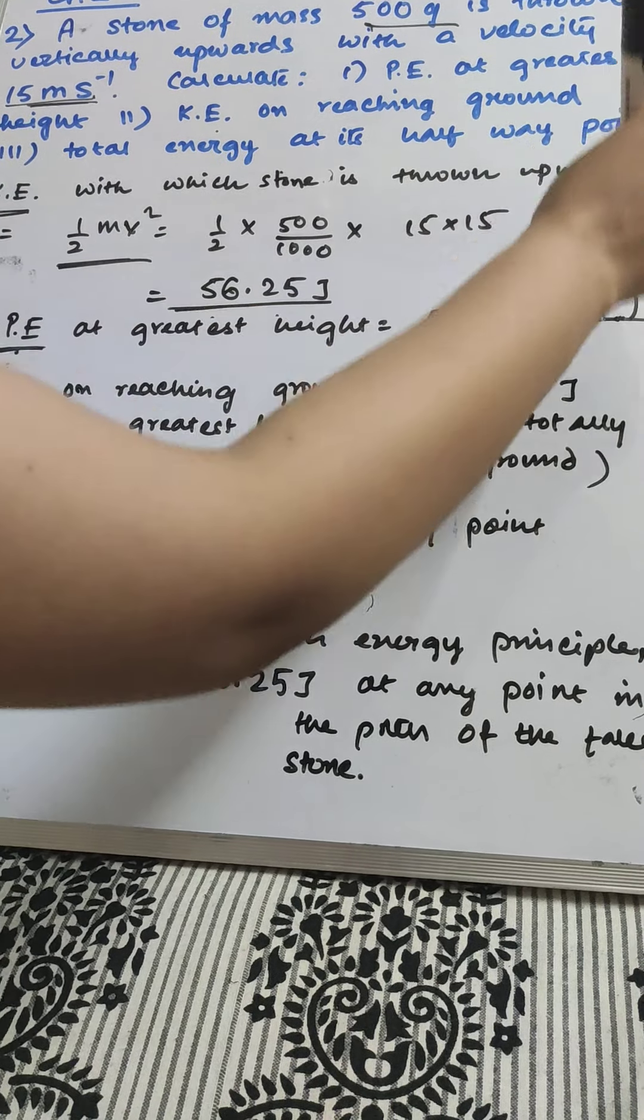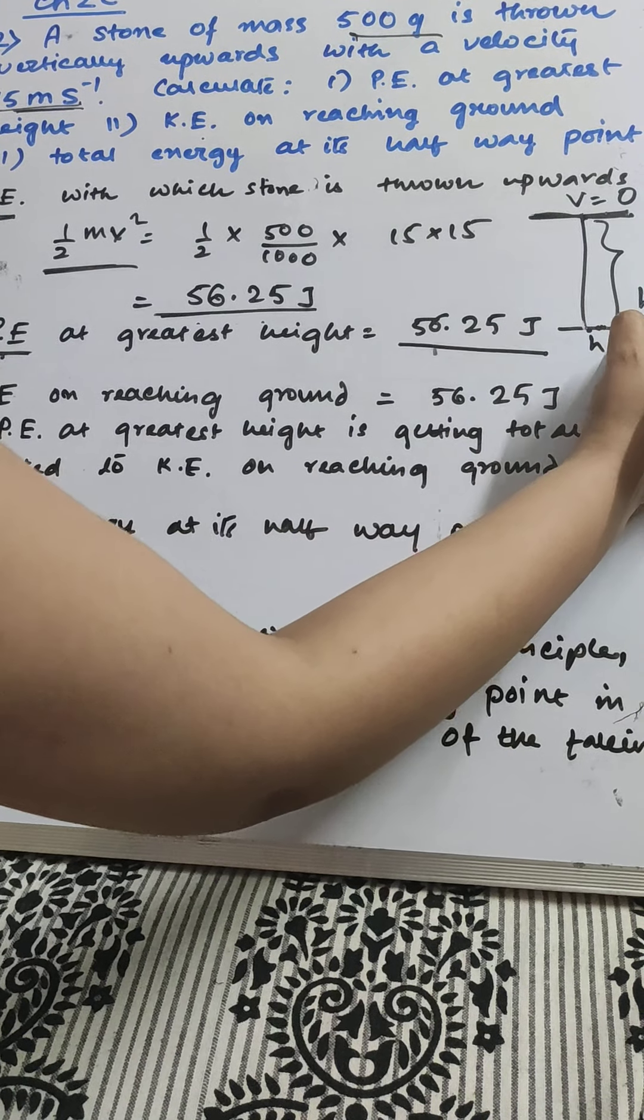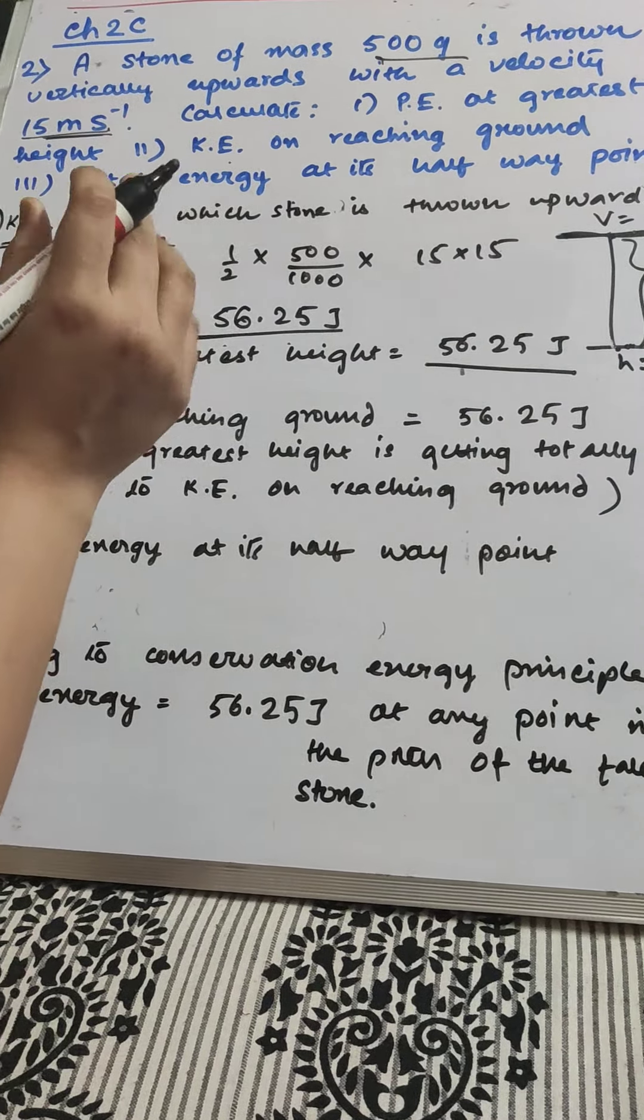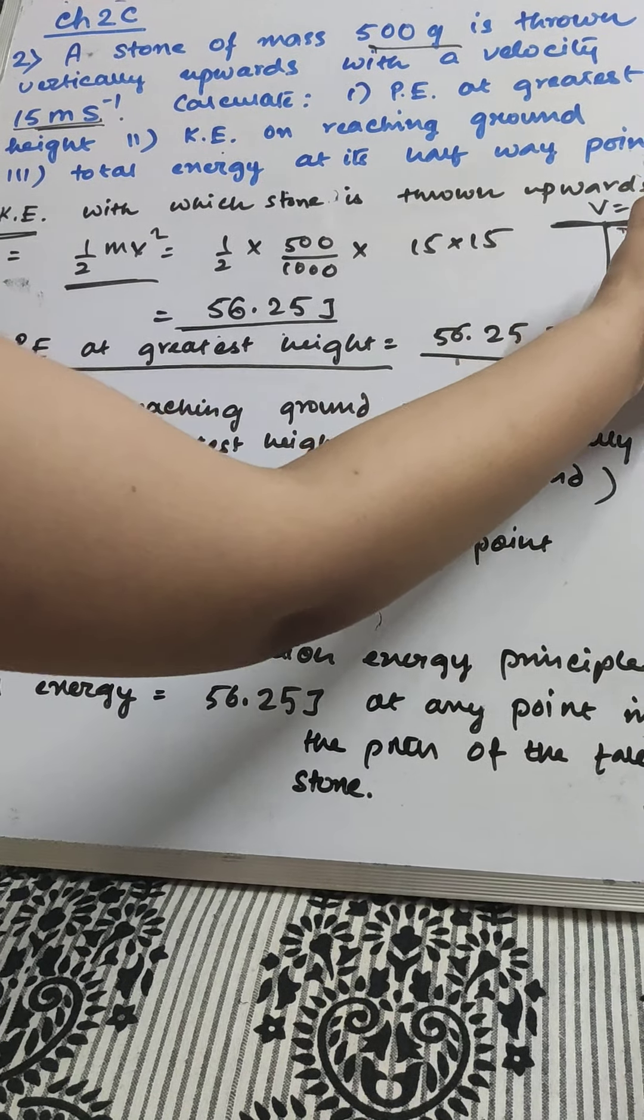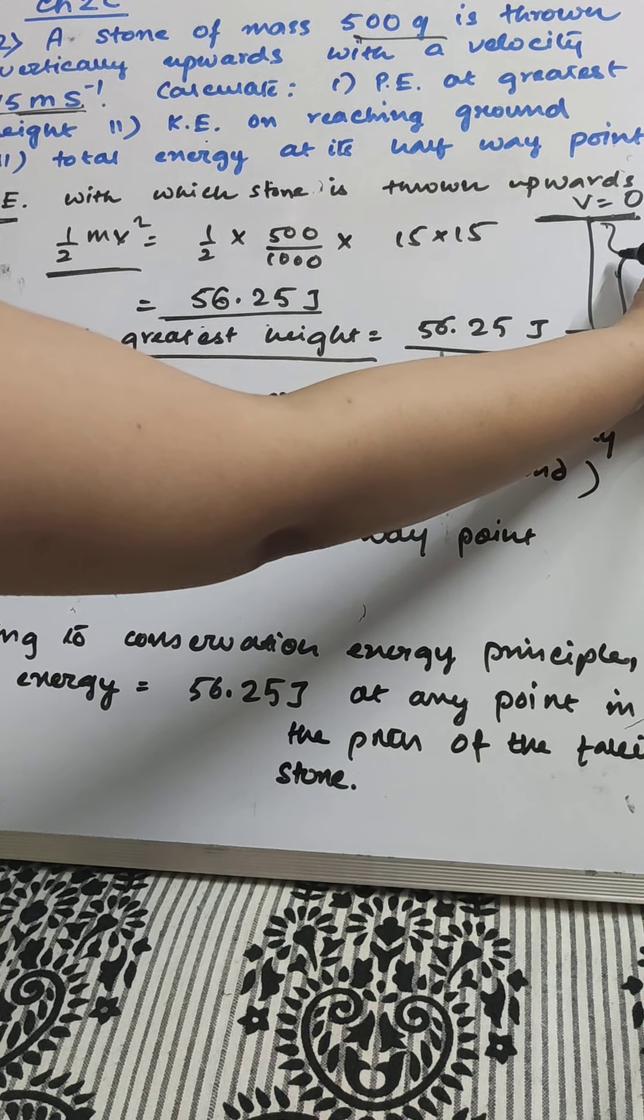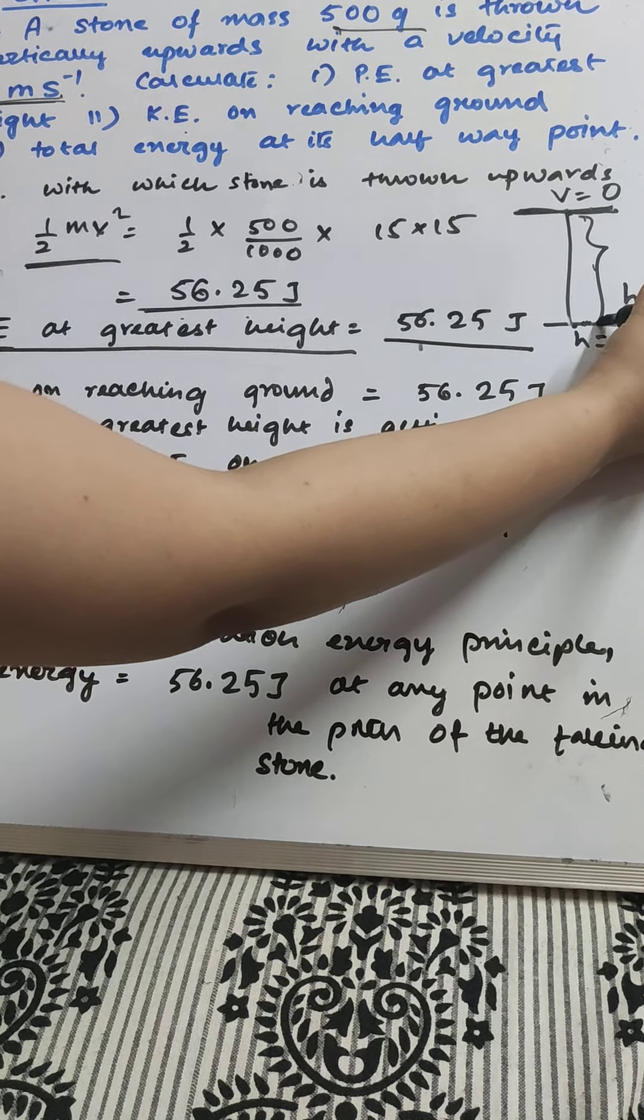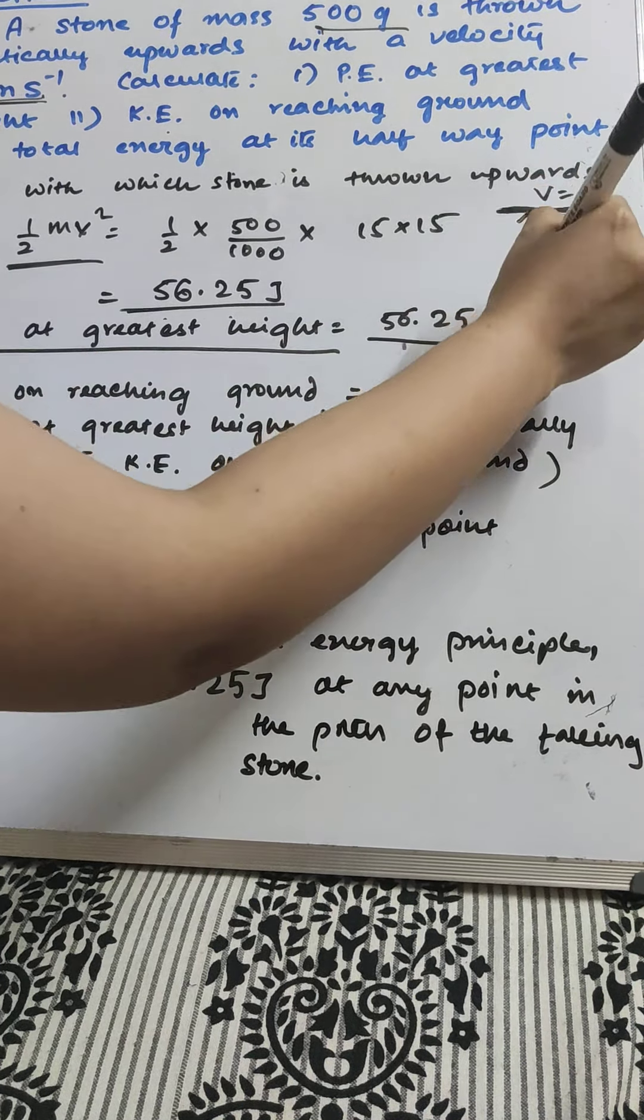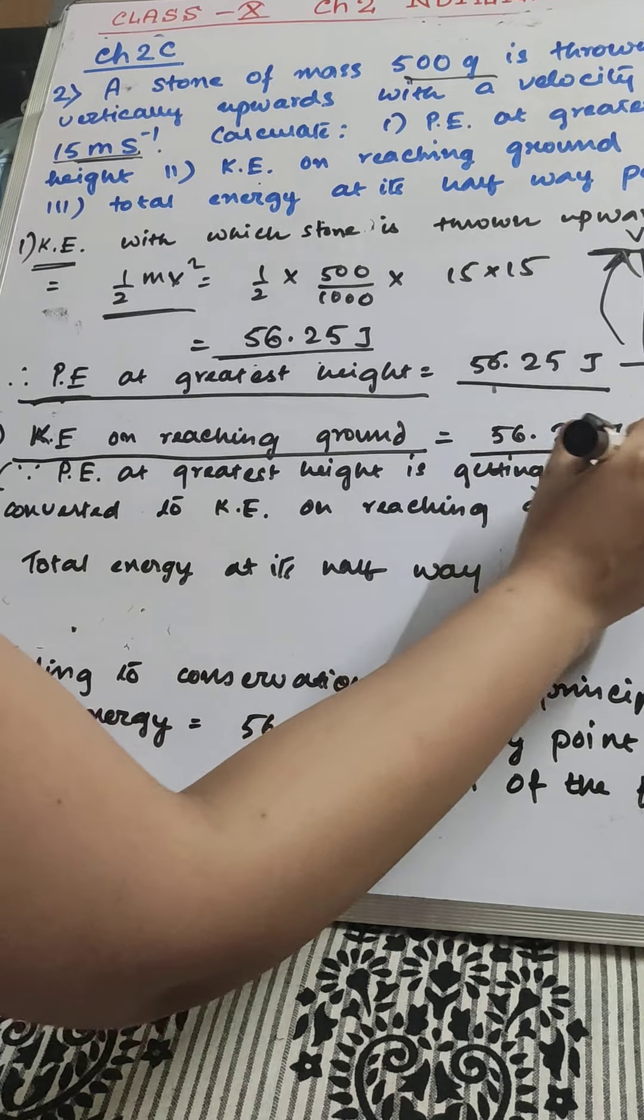When the stone automatically falls down, when it reaches the ground, H will become 0. If H is equal to 0, potential energy is 0. That means the whole of the potential energy which was at the greatest height gets converted. Gradually, potential energy is getting converted to kinetic energy slowly. On the ground, potential energy minimum, that is 0, kinetic energy maximum. Kinetic energy on reaching the ground, 56.25 joules again.